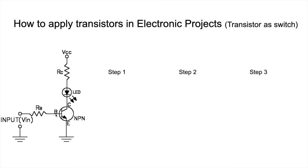RB is called the base resistor because it's connected to the base of the transistor, and RC is called the collector resistor. It's not only the LED that can be controlled this way — you can control any electronic component using this method. The only condition is that you select an appropriate transistor for that scenario.